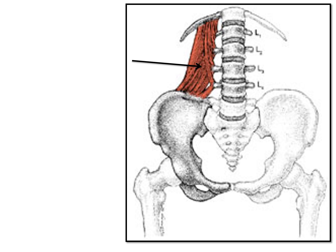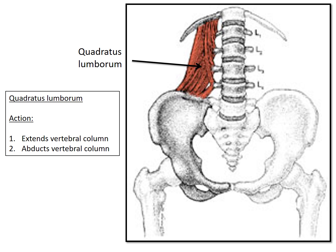Another muscle here is the quadratus lumborum. The action of this muscle is to extend the vertebral column and also to abduct the vertebral column. For example, doing backbends would be extending the vertebral column, and bending side to side would be abducting the vertebral column.